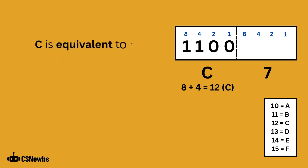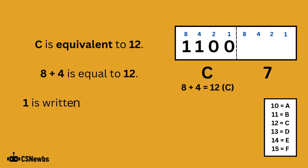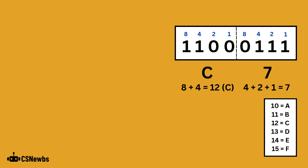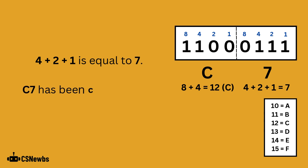C is equivalent in hexadecimal to 12. 8 plus 4 is equal to 12, so 1 is written beneath the 8 and the 4 place values, and a 0 beneath the other two. 7 is equal to 4 plus 2 plus 1, so 1 is written beneath those place values, and a 0 beneath the other one. C7 has now been converted into binary.